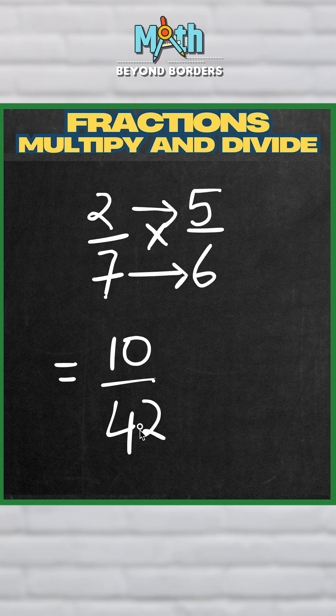For example, I know 10 and 42 both can be divided by 2. So when we divide 10 by 2 we get 5, and when we divide 42 by 2 we get 21. So this will be the final reduced answer or the simplified form of the answer.